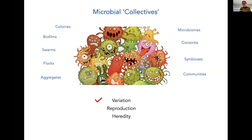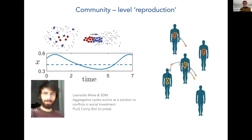Variation basically comes for free, but reproduction and heredity are more complicated to get. Reproduction can either come as the effect of the establishment of a life cycle. There are many papers on the emergence of life cycles, including by some of the people present at this seminar. I take the opportunity to advertise our new paper with Leonardo Miele on the subject.